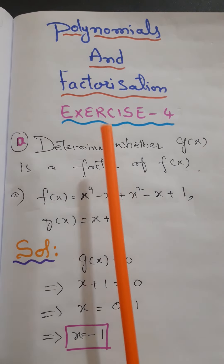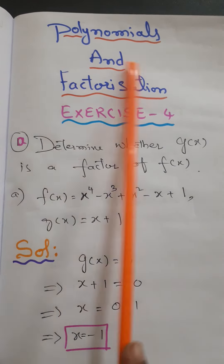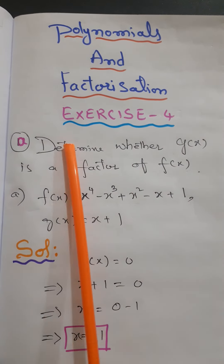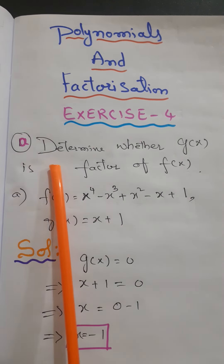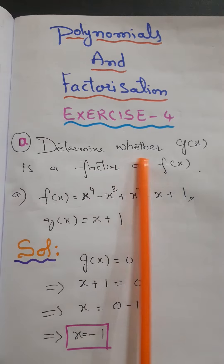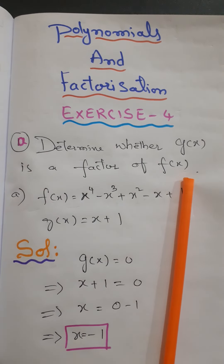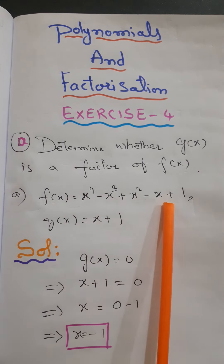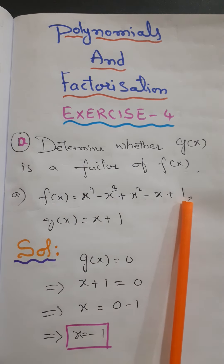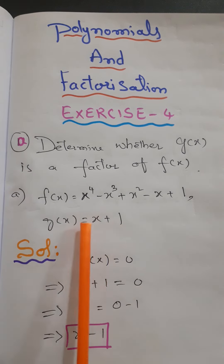Good morning. Today I am going to solve the Class 9th math topic on polynomials and factorization. This is Exercise 4, first question, first part (a): determine whether g(x) is a factor of f(x). Here f(x) = x⁴ - x³ + x² - x + 1 and g(x) = x + 1.